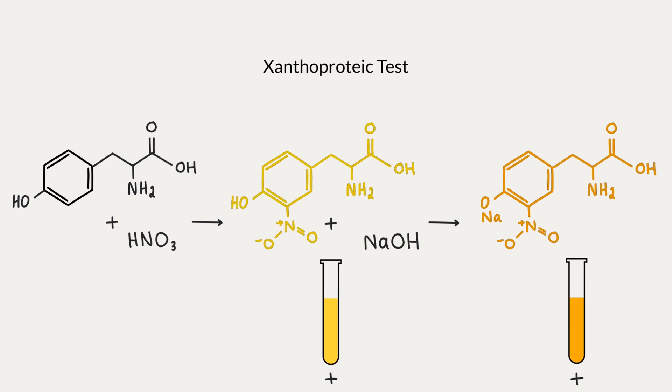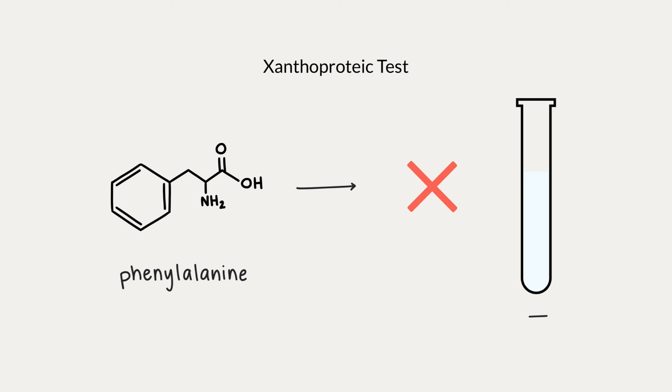If you know your amino acids, you might ask why phenylalanine isn't included, since it also has an aromatic group. Well, tyrosine and tryptophan contain activated benzene rings that we can easily nitrate. Phenylalanine's benzene ring is stable and difficult to nitrate under normal conditions, so it won't react with this test and will give a negative result.